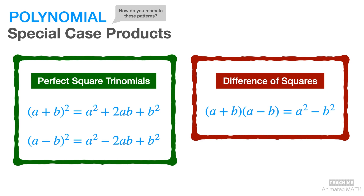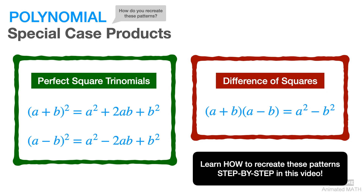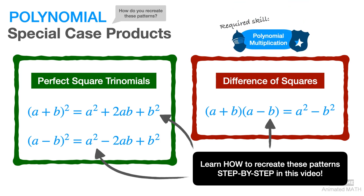Don't worry though, because I will show you how to do this step by step in this video. And if you play a lot of games, then you're aware that there is often a skill tree used as a guide for unlocking more advanced skills. In this case, the required skill is called polynomial multiplication. Be sure to click the i button if you don't have that skill yet.